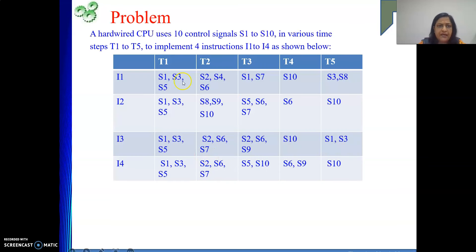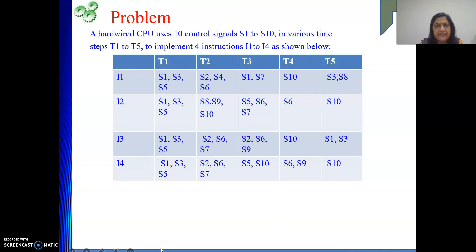A hardware CPU uses a hardware control unit design that can generate 10 control signals S1 to S10, in various time steps T1 to T5, to implement four instructions I1 to I4. So only four instructions are there, the maximum number of steps is 5, and the various control signals appearing in their execution are S1 to S10. The control sequence is given: for instruction I1 in step T1, signals S1, S3, S5 will be generated; for I1 in step T4, only S10 is generated — and so on for all instructions. We are supposed to write the expressions for generating control signals S5 and S10.